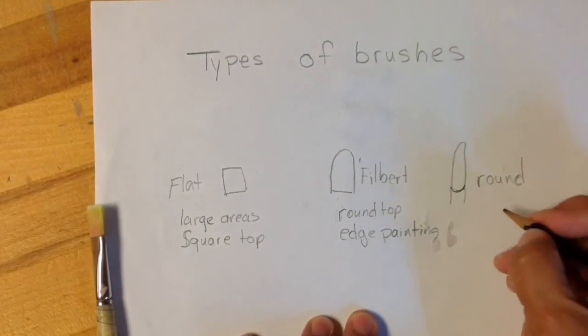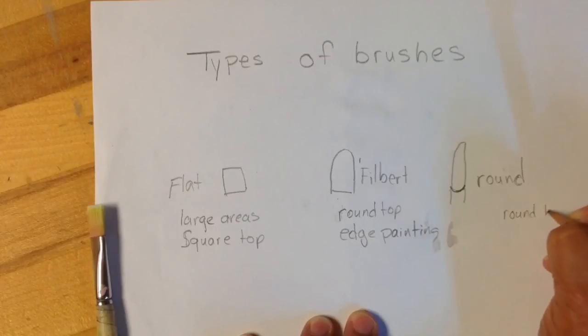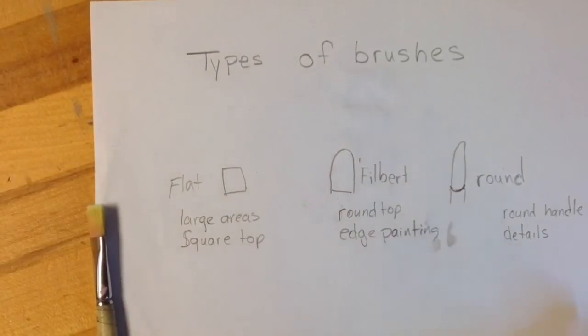And the round brush has a round handle, it's rounded, and it's used for details. Those are the three types of brushes that we'll be using in our painting unit.